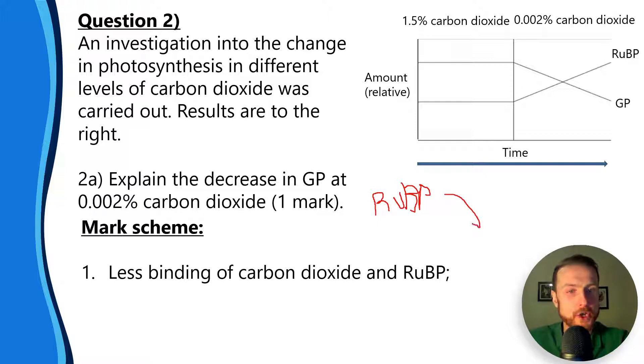Because in the Calvin cycle, we go RuBP here, and then we go to GP - two times GP here - and that uses CO2.